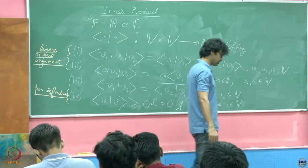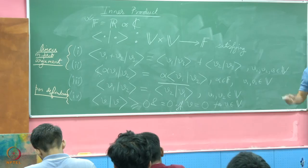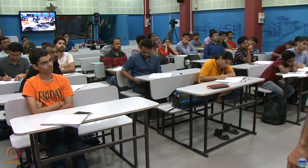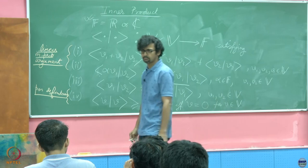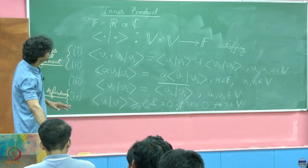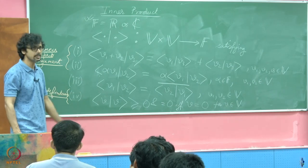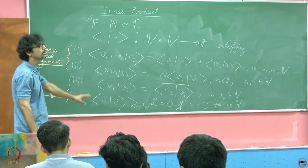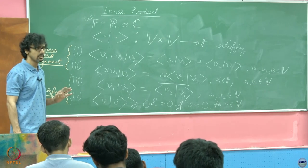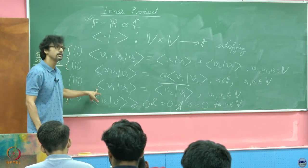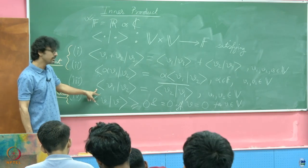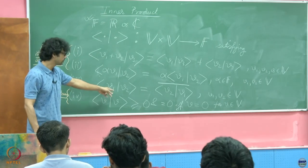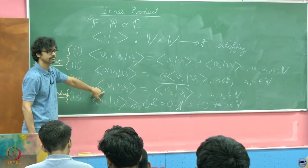What about the second argument? The definition assures us that the inner product is linear in the first argument. If it is also linear in the second argument, we could say it is bilinear. But the definition remains silent on the second argument, leaving a hint through the third property as to how we could probe it.